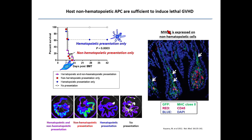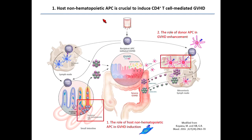Indeed, MHC class 2 is expressed on non-hematopoietic cells. This is a small intestine villus showing MHC class 2 in green and the CD45 hematopoietic marker in red. Hematopoietic MHC class 2-expressing cells are shown as a reddish-yellow color. But here there are clearly green single-positive cells meaning non-hematopoietic MHC class 2-expressing APCs. In conclusion of the first part: host non-hematopoietic APC is crucial to induce the CD4 T-cell-mediated GvHD.